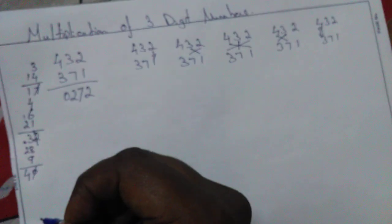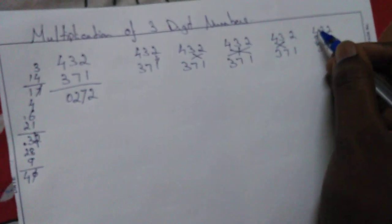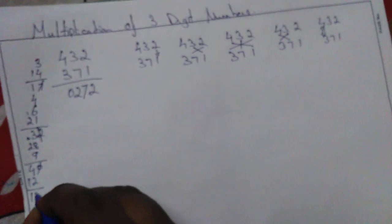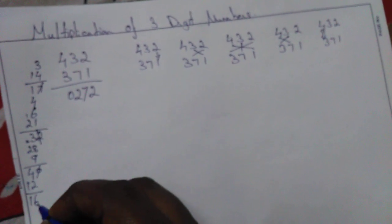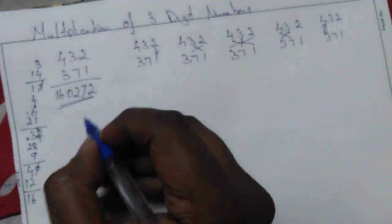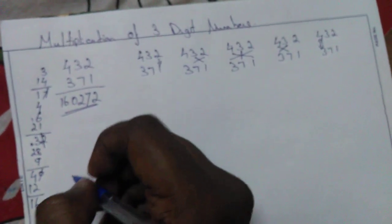Next, 4 into 3 is 12. Let's put 12 plus 4, we have 160,272. So this is the answer for this method.